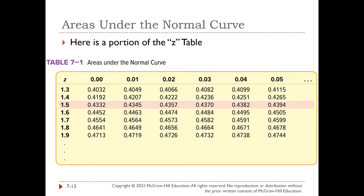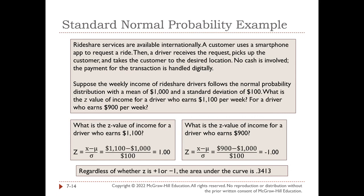We also have what is called the z-table. The z-table helps us once we figure out the z number. For example, if you have a z equals 1.5, this reflects an area or probability of 0.4332. The entire table can be found in your book, and we'll use it in practice problems and homework videos.